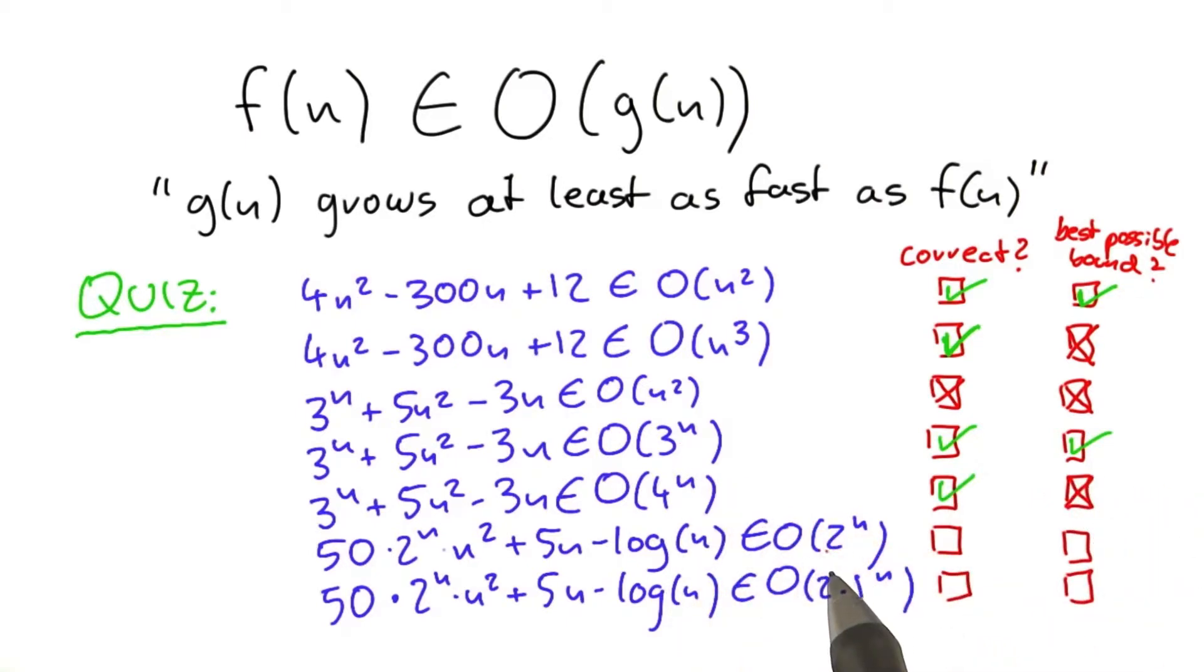This one down here is similar to one of the examples that I just showed you. So we can ignore the constant here. And 2 to the power of n times n squared grows faster than 2 to the power of n. So this is not correct. And since it's not correct, it cannot be the best possible bound.